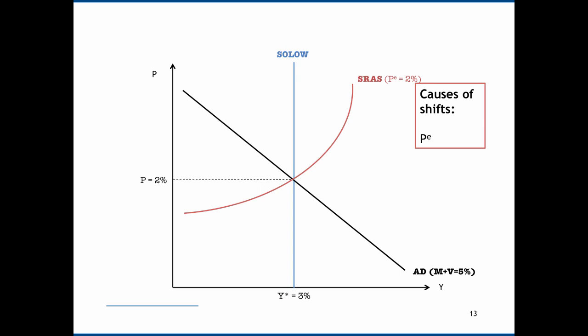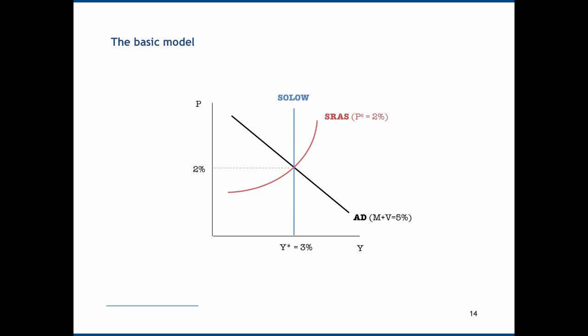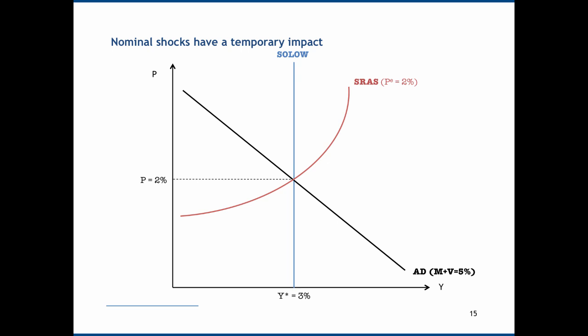Given the definition of the short run aggregate supply curve — relationships of inflation and real GDP growth for a given expected inflation rate — the only real cause of shifts in it will be changes to expected inflation. This is our basic full model, and let's look at how it works in practice. We're going to demonstrate how nominal shocks have a temporary impact now that we've introduced a short run aggregate supply curve. In other words, if we accept that prices are somewhat sticky, then there will be an adjustment process by which we get to a new equilibrium. Aggregate demand starts off where M plus V equals 5%; let's imagine an increase in the money supply such that M plus V is now equal to 7%, and we shift the aggregate demand curve outwards.